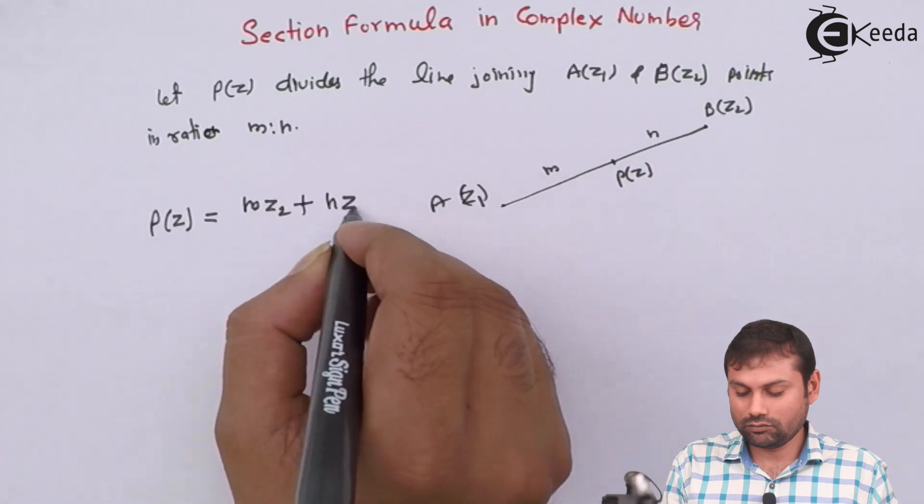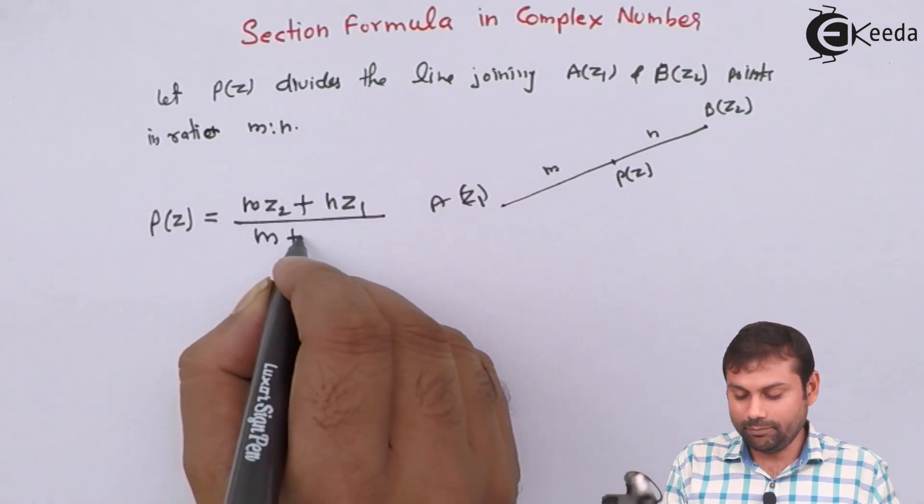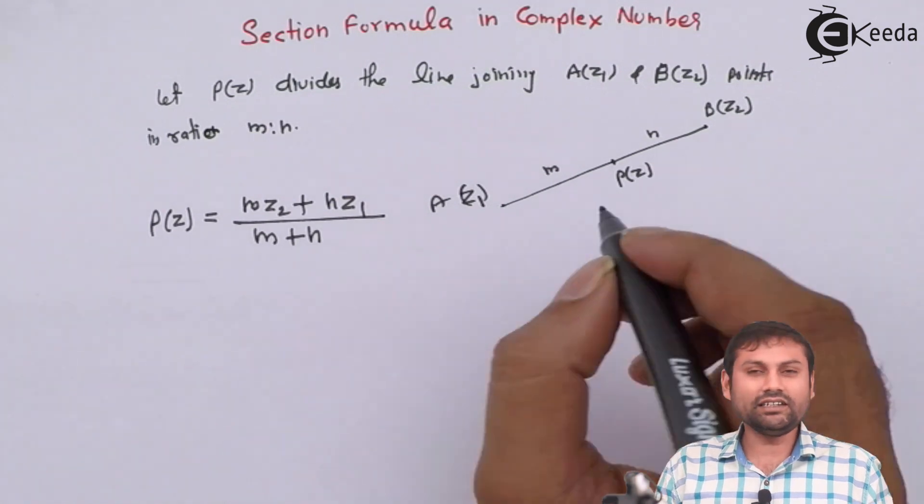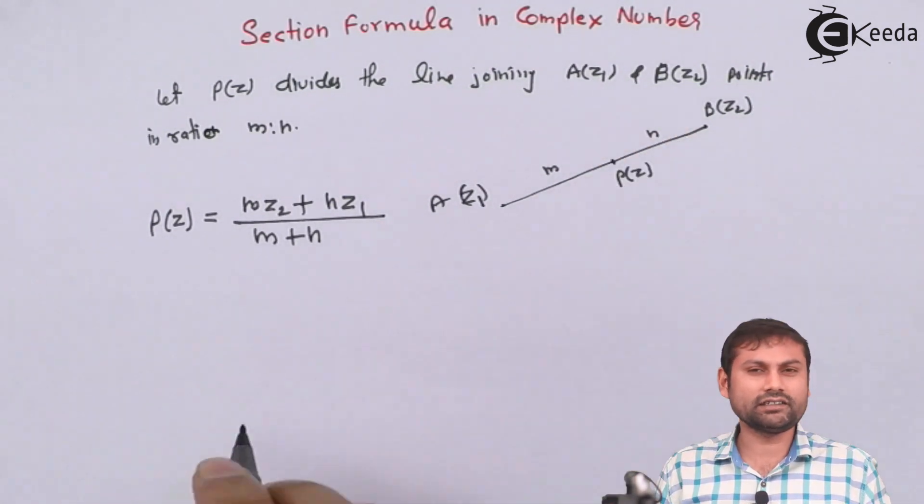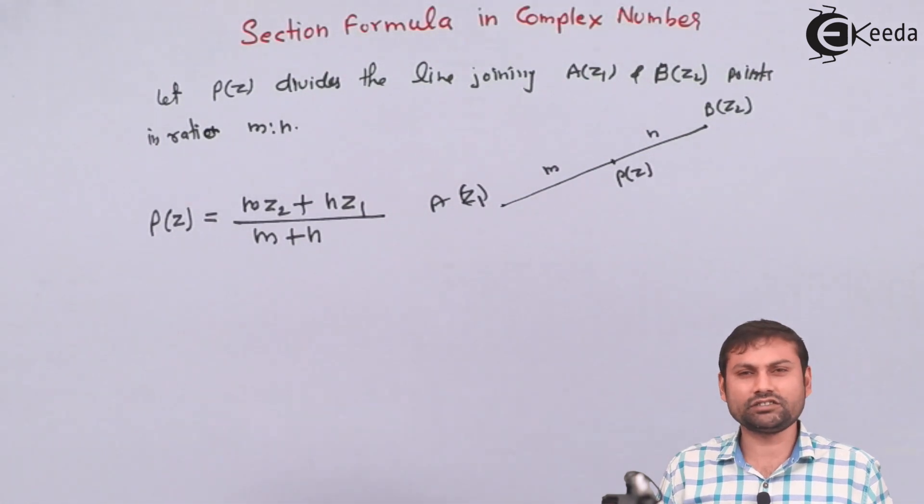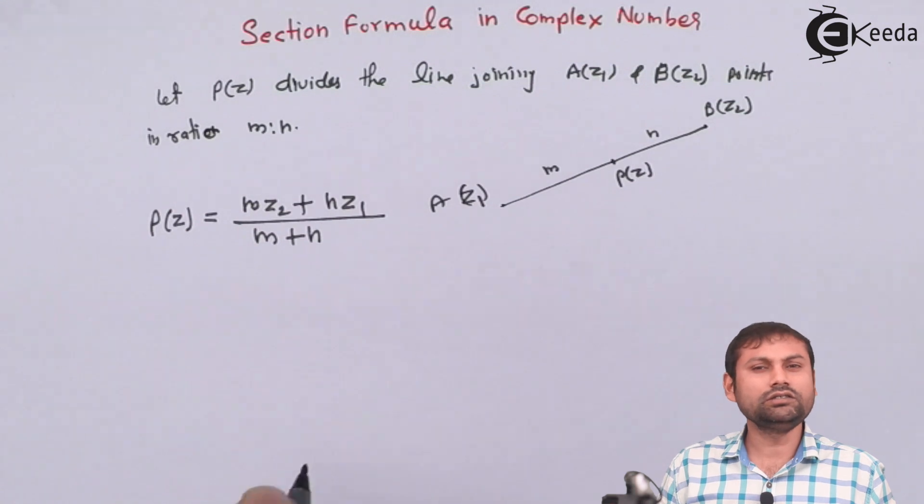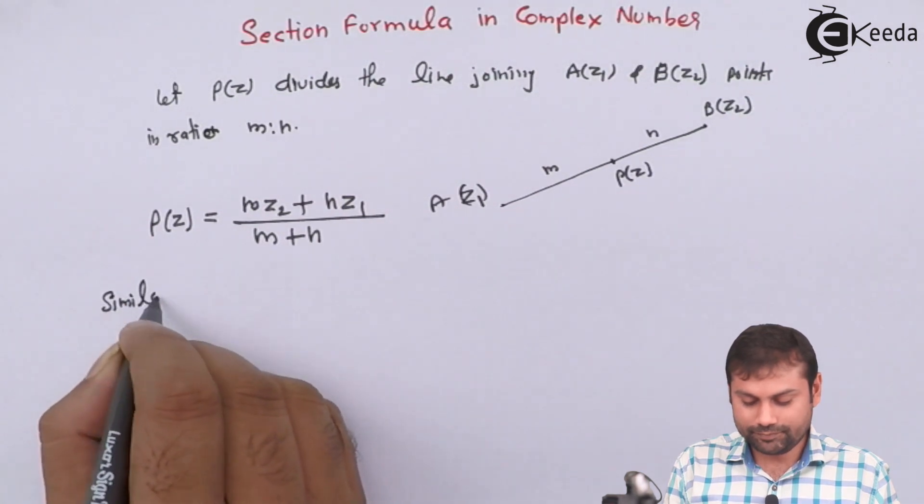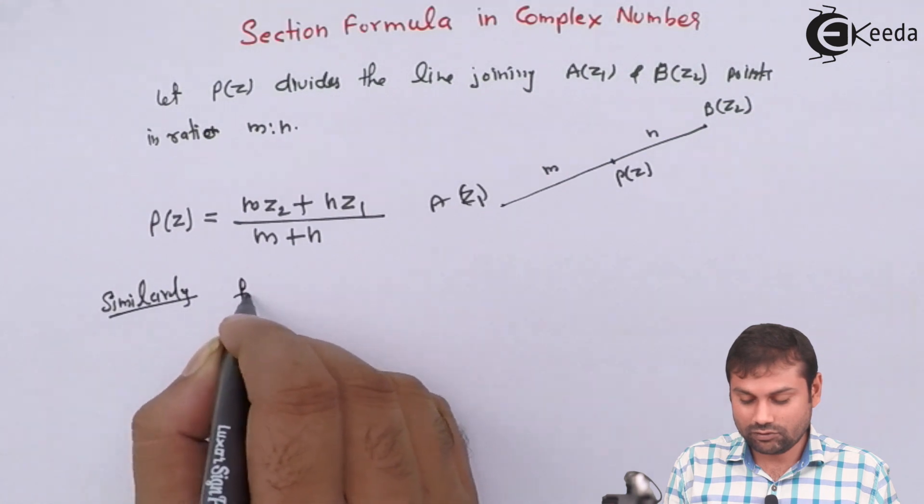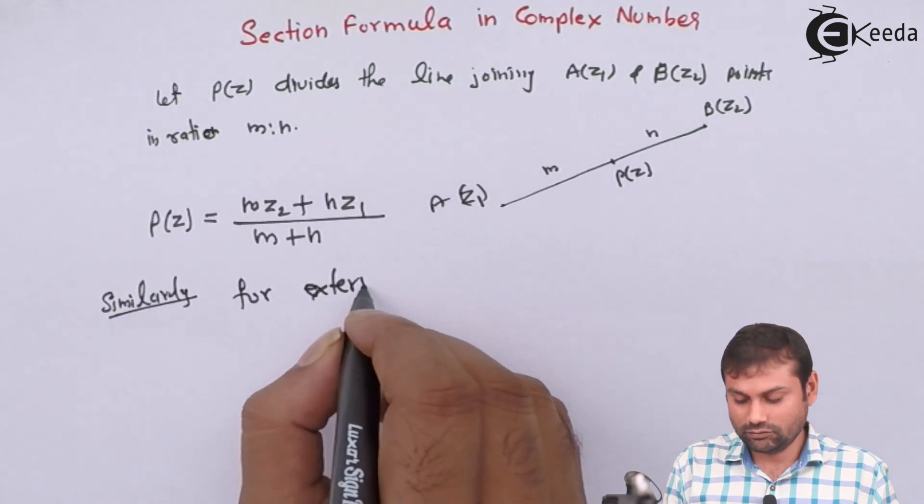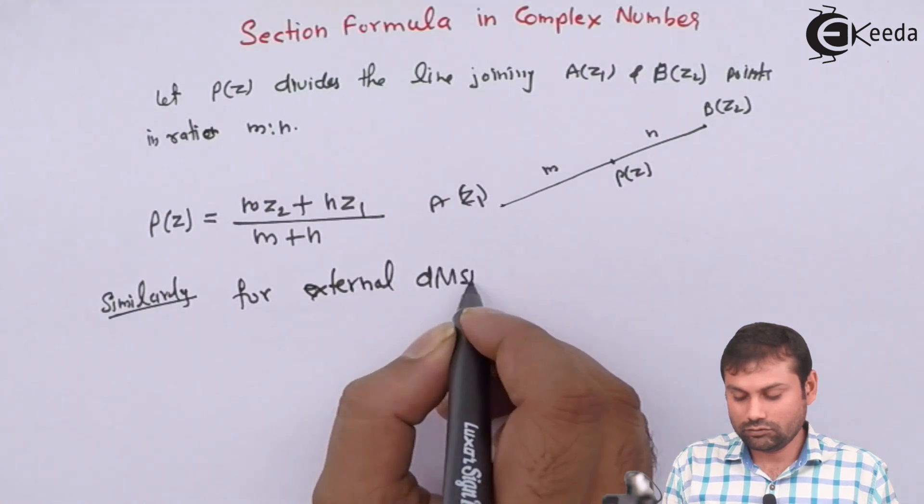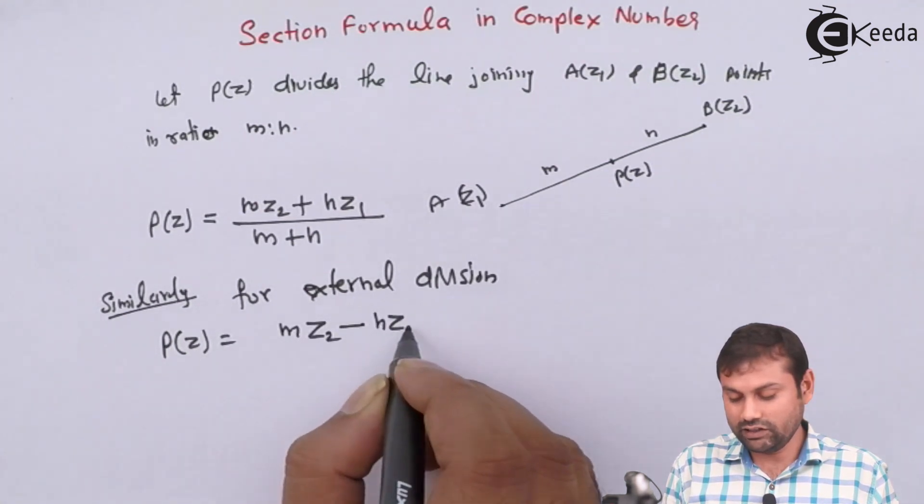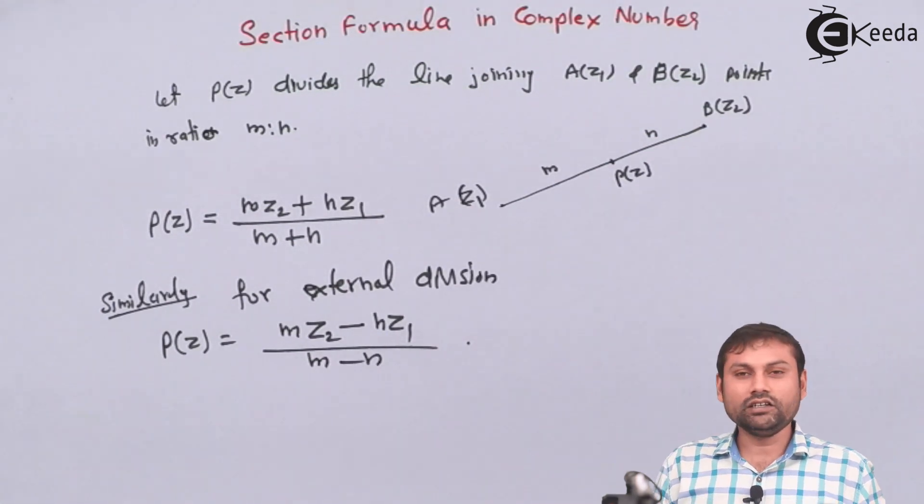Similarly, अगर P(z) क्या होता है, this is the internal division, okay, internally divide कर रहा है। अगर externally divide कर रहा है तो जैसे वहाँ पे क्या होता था M X2 minus N X1 upon M minus N, same चीज यहाँ पे होगा। Similarly, for external division, in that case P(z) equals to M z2 minus N z1 upon M minus N, okay.